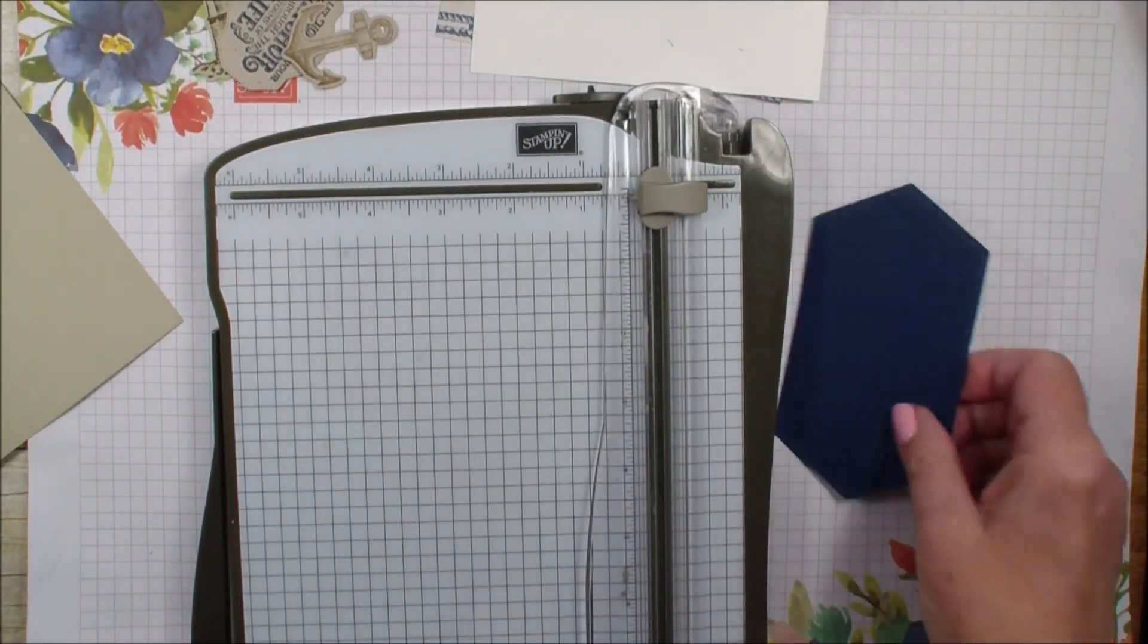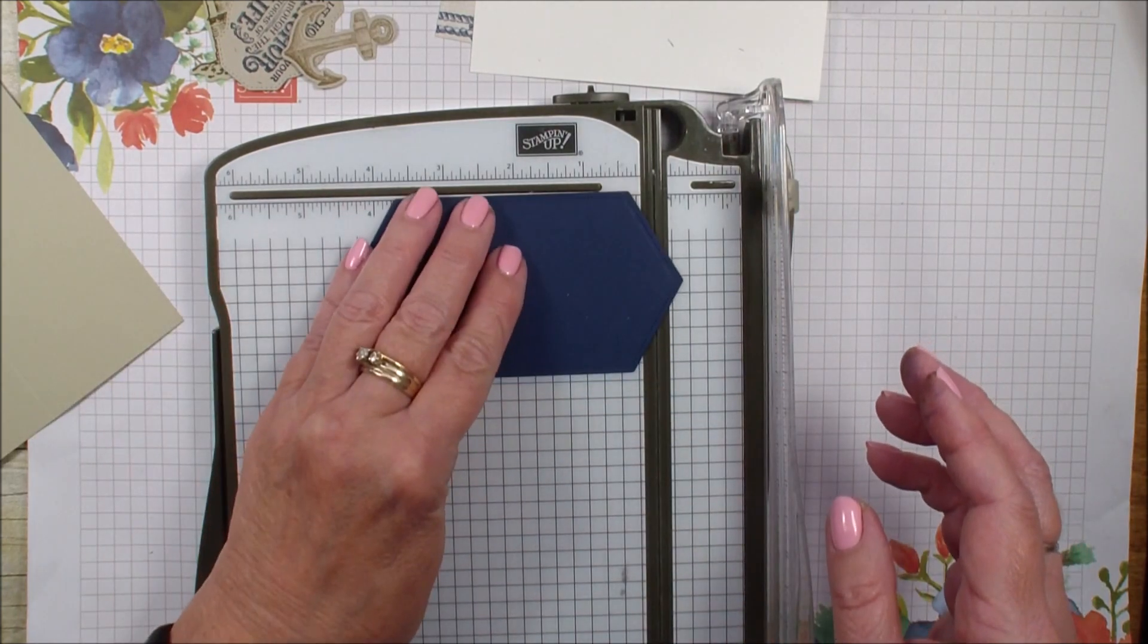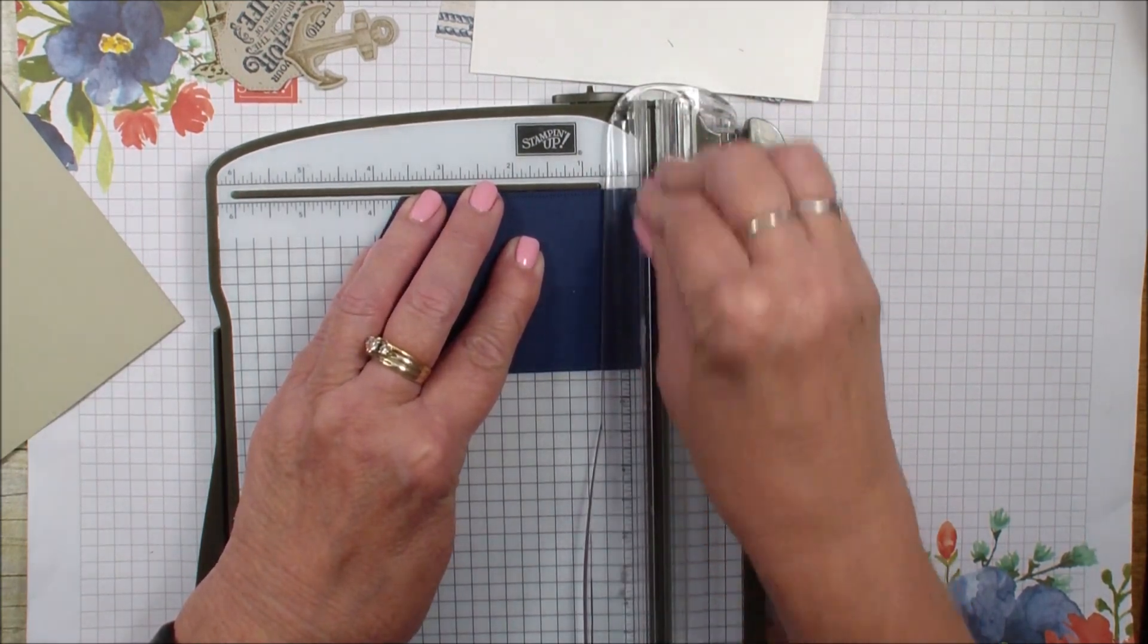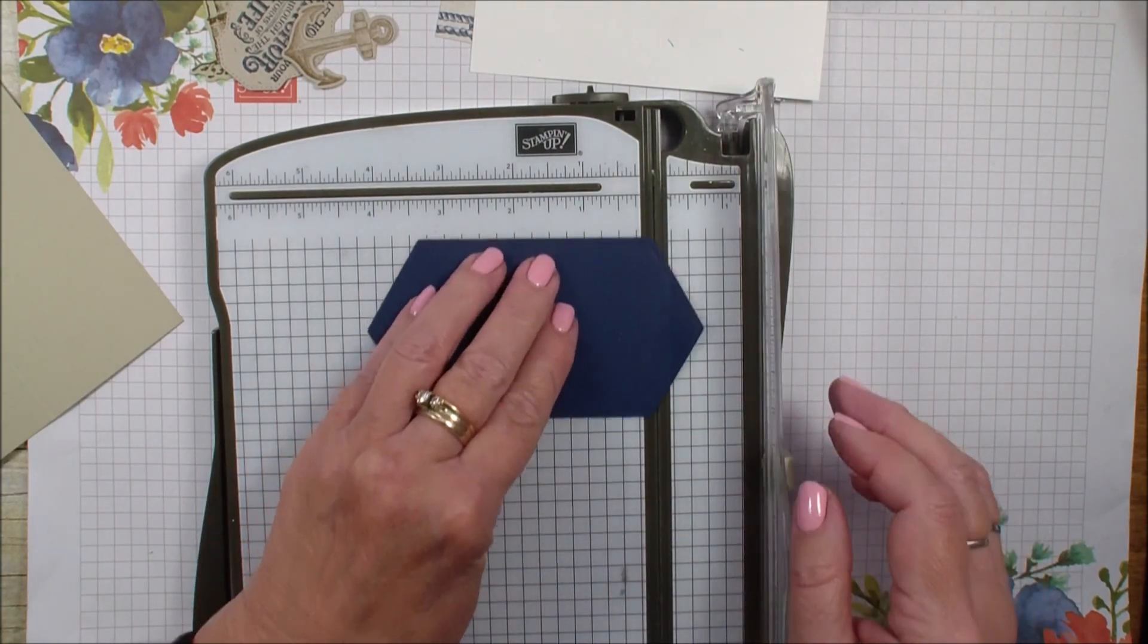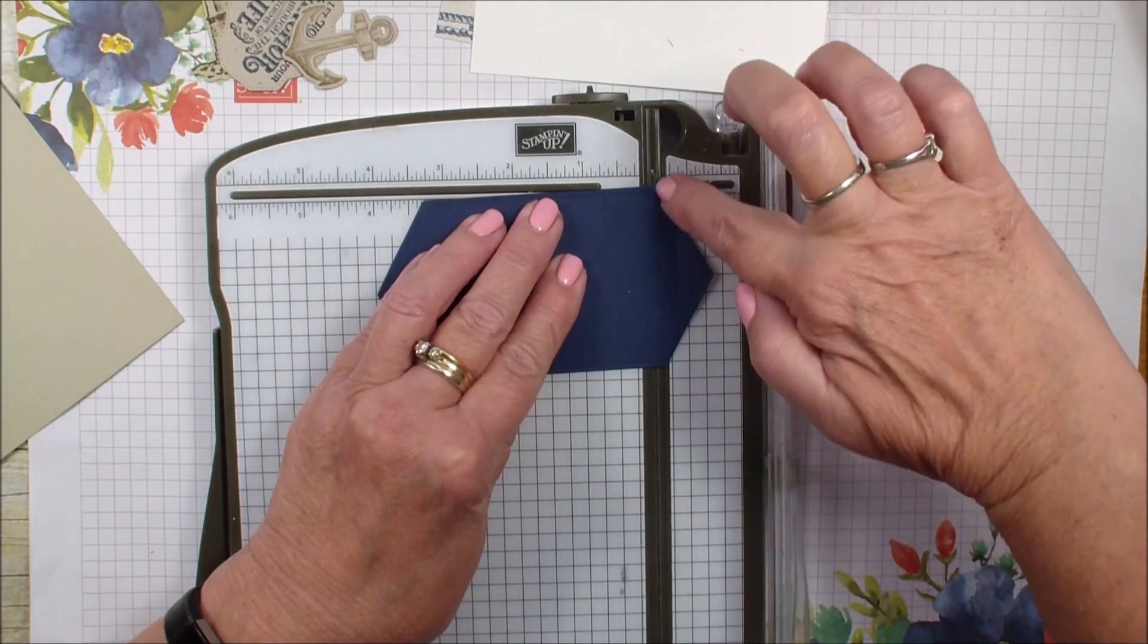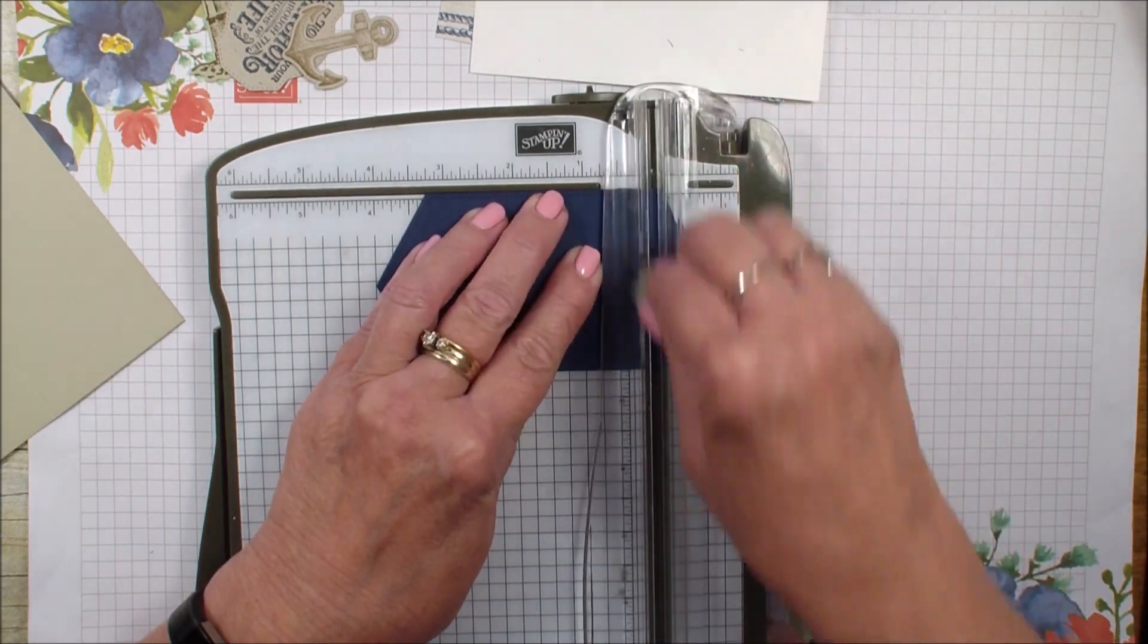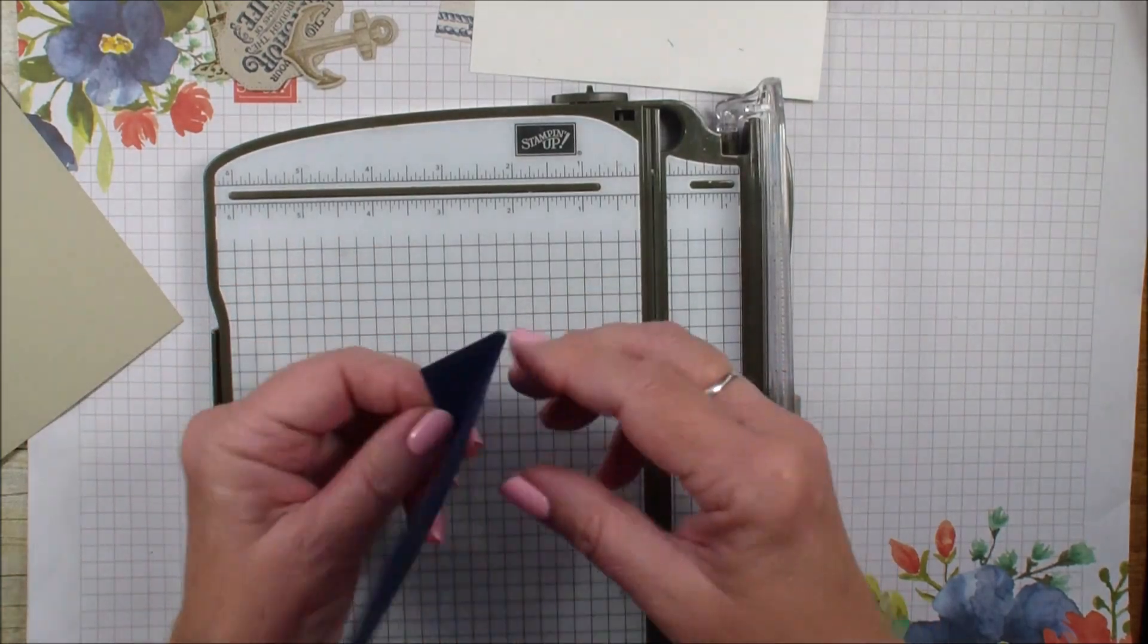What I'm going to do next is bring in that Stitch Nested Label and score that at the half inch mark. So I've got a little score across there. You know what, I think I'm going to score that more. I'm going to score it right where the points come down. So it is like seven-eighths of an inch. I think that's going to work better for what I'm going to do. So let's fold that over like so.